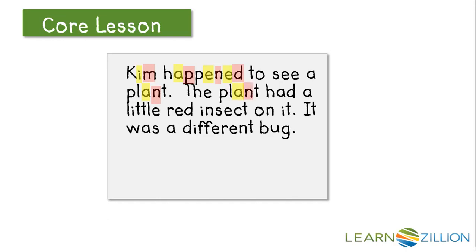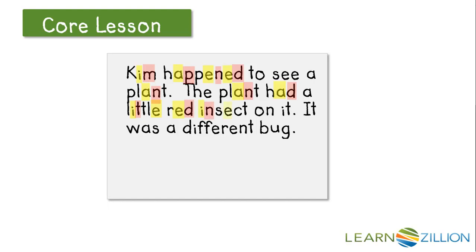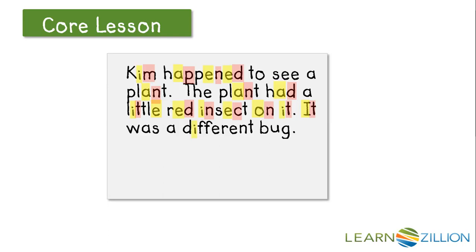The plant — here's another vowel and consonant — had a little red insect on it. The plant had a little red insect on it. It was a different bug — diff-fer-ent. Look at all those vowels followed by consonants.